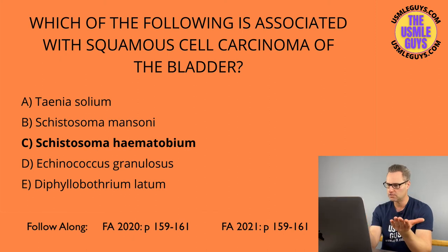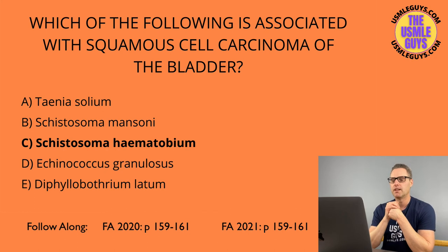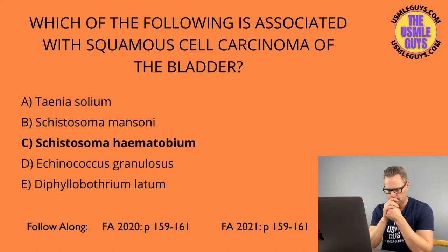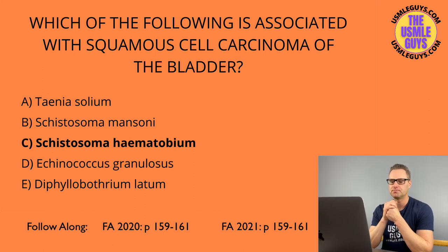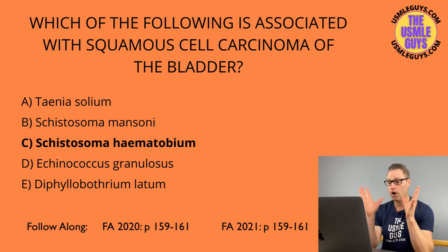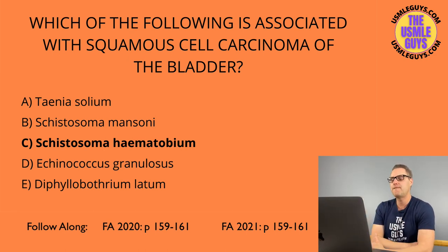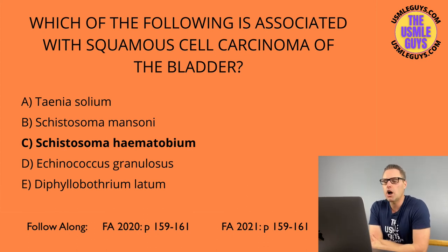The answer for question four is Schistosoma haematobium — the topic of this question. Question five: portal hypertension. The answer is Schistosoma mansoni. Question six: causes a B12 deficiency — super high yield. The correct answer is Diphyllobothrium latum. Question seven: can cause microcytic anemia? There are two: Ancylostoma and Necator.